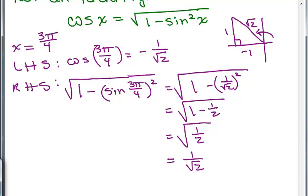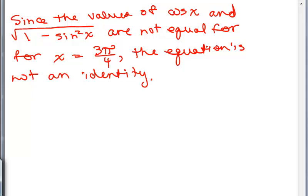Even before working through all that, you can tell this will happen because the right-hand side is the square root of something, so it's always going to be non-negative, whereas the cosine can end up being a negative number on the left-hand side. This value of X shows the left-hand side and right-hand side are not equal, which means cosine X equals square root of 1 minus sine squared X is not an identity. Since the values of cosine X and square root of 1 minus sine squared X are not equal for X equals 3 pi over 4, the equation is not an identity.